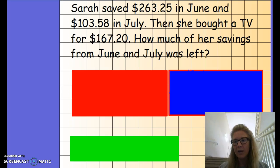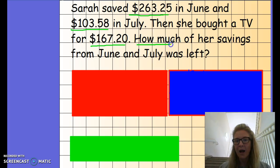So we've read the question, the next thing we do is we underline the important information. So that would be the two amounts, okay, of money that Sarah has saved. Also important is the amount of money it costs for her to buy the TV. Then we want to know how much of her savings are left.